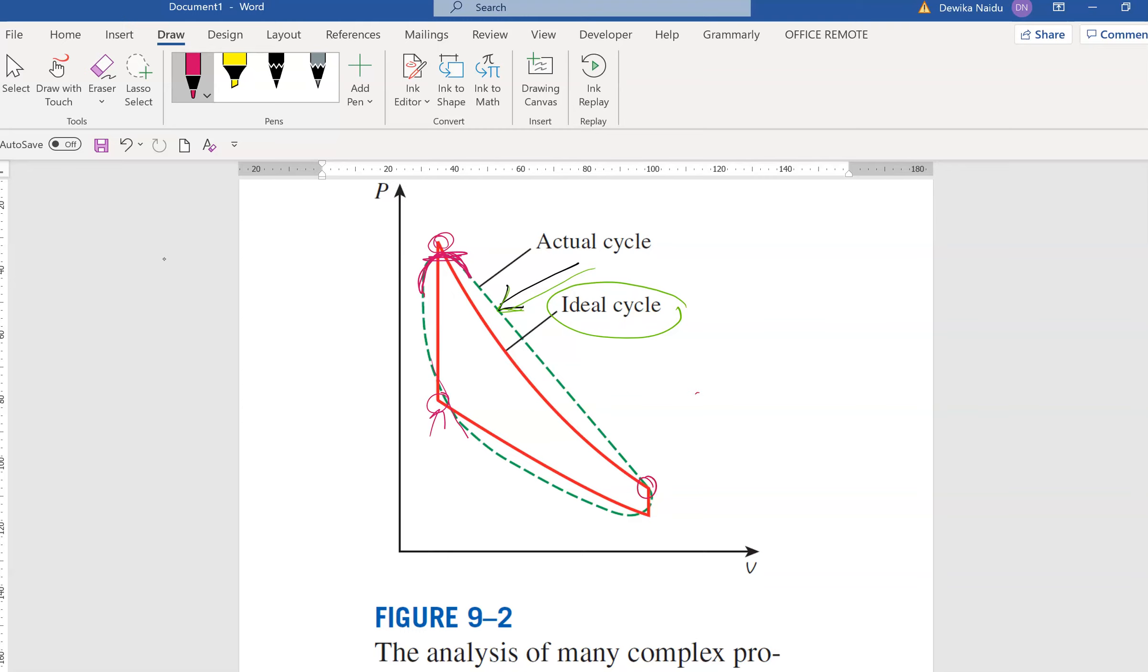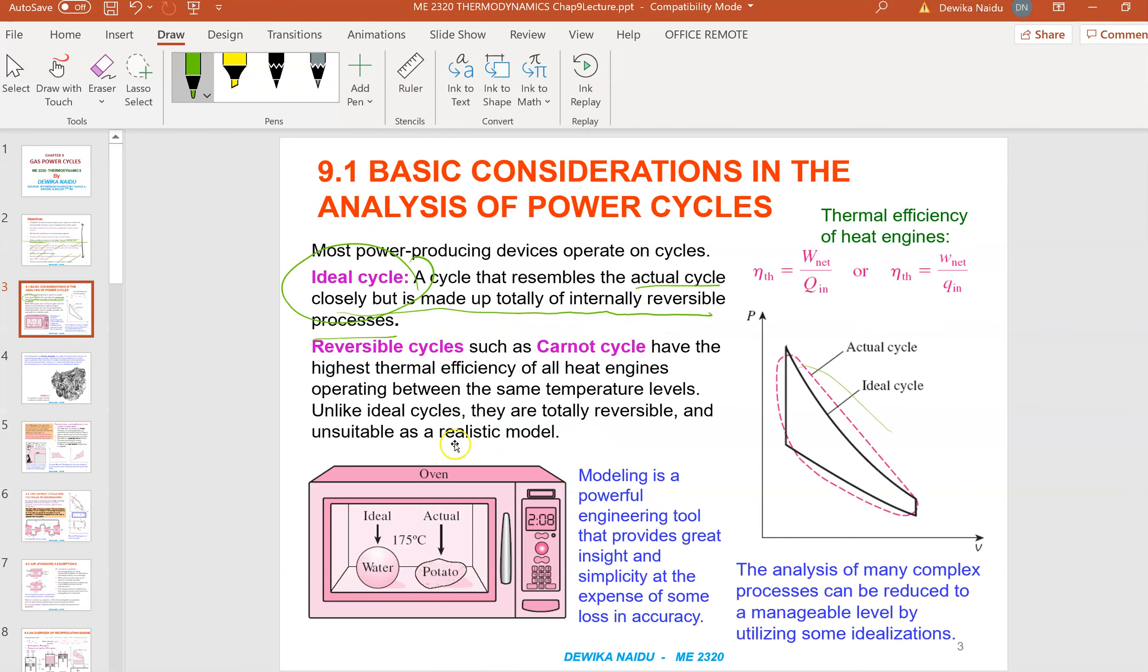But then when you idealize the cycle, it's like a sharp point. You know exactly where it's stopping, where is it moving straight, where the changes are actually happening. That's the reason when it comes to textbook, we always use ideal cycle, which has the highest thermal efficiency of all the heat engines operating between the same temperature levels.